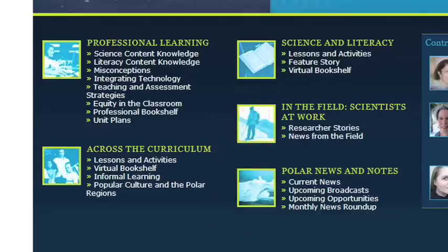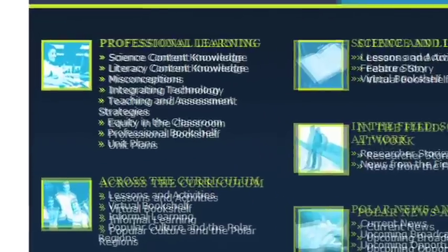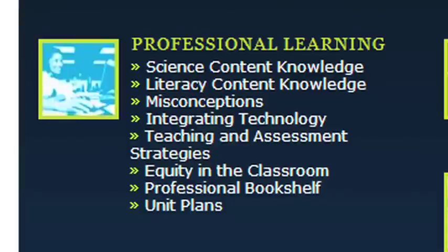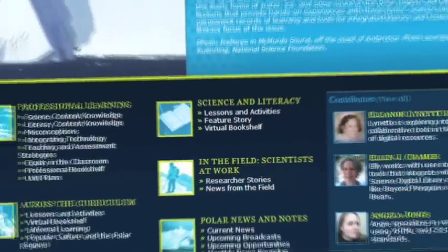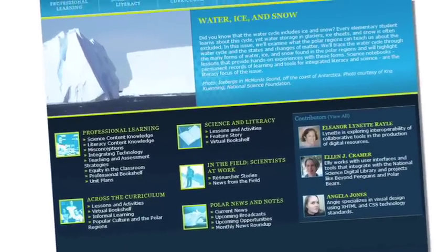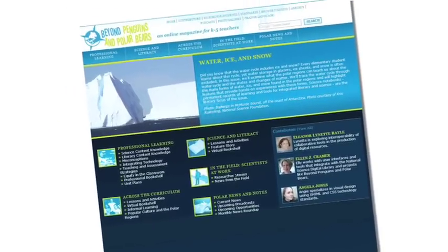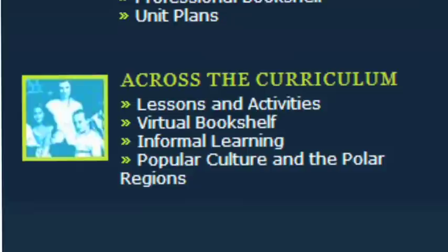Under each of the department titles you'll see column titles such as science content knowledge, misconceptions, lessons and activities, feature story, and researcher stories, each providing ways to improve student achievement in science as well as in reading comprehension and oral and written discourse abilities. You can click on each column link to find information that relates to the theme of that issue of the magazine.